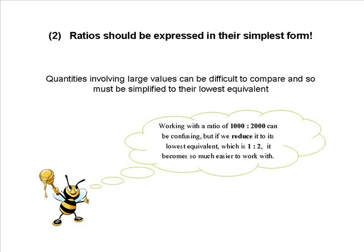Secondly, ratios should be expressed in their simplest form. Quantities involving large values can be difficult to compare, and so must be simplified to their lowest equivalent. Working with a ratio of 1,000 to 2,000 can be confusing.